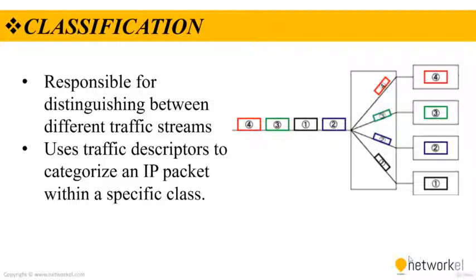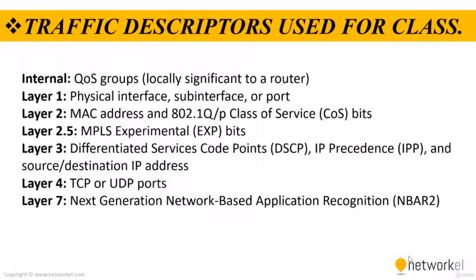Packet classification should take place at the network edge, as close to the source of the traffic as possible. Once an IP packet is classified, packets can then be marked, remarked, queued, policed, shaped, or any combination of these and other actions. The following traffic descriptors are typically used for classification.